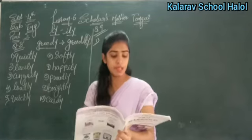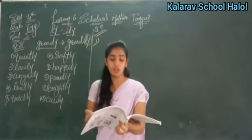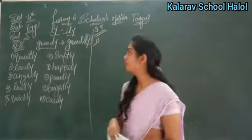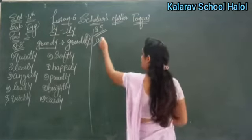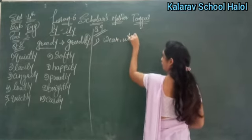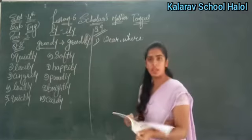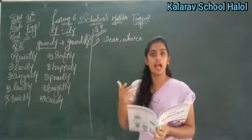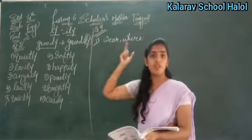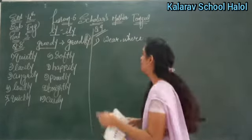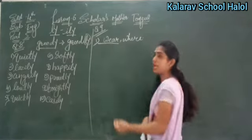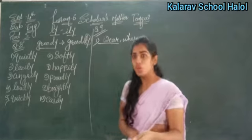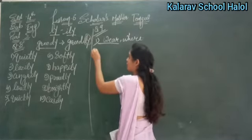Now question number nine में देखो: fill in the blanks with the correct word from the bracket. Correct word match करना है sentence के साथ और उनको लिखना है। 'Which dress will you dash for the party?' अब आपको दो options दिये हैं — wear और where. यह दोनों का pronunciation same है, बट wear का मतलब होता है dress पहनना, और where का मतलब होता है कहाँ। So it is 'wear' — which dress will you wear for the party?